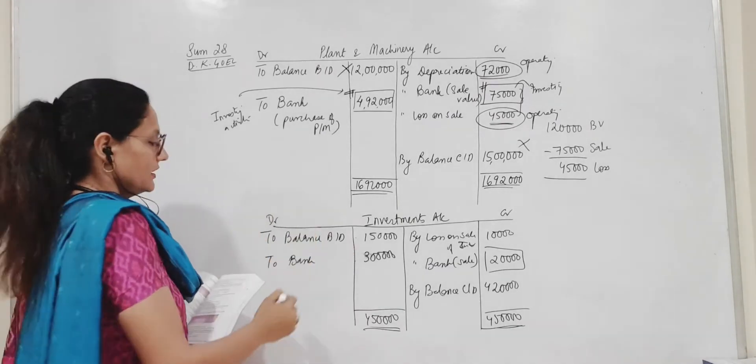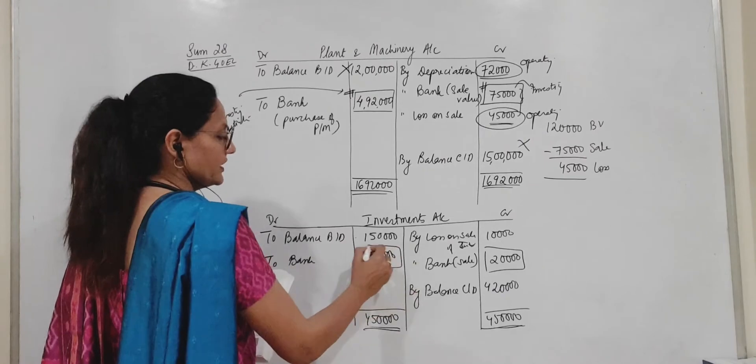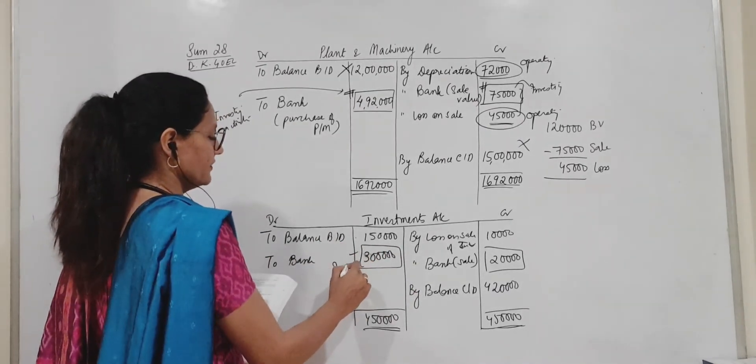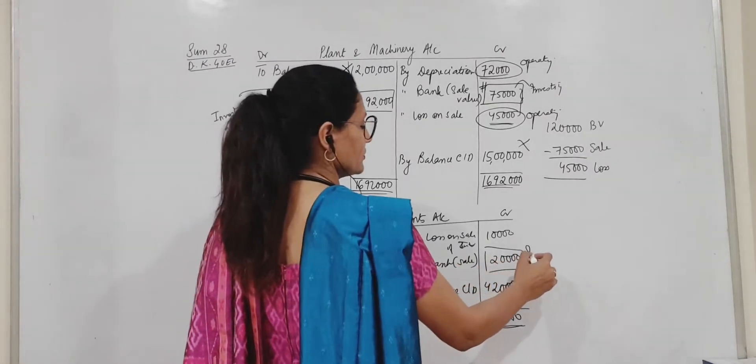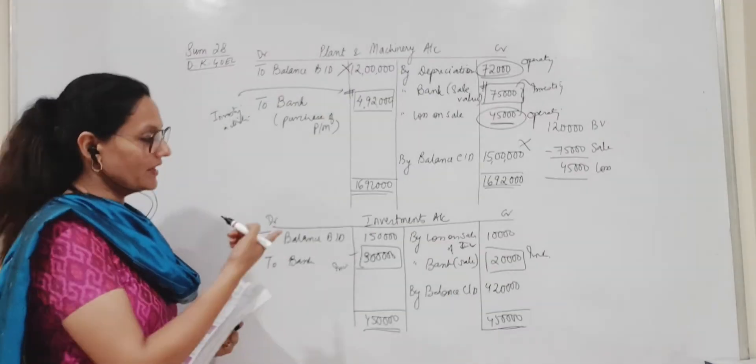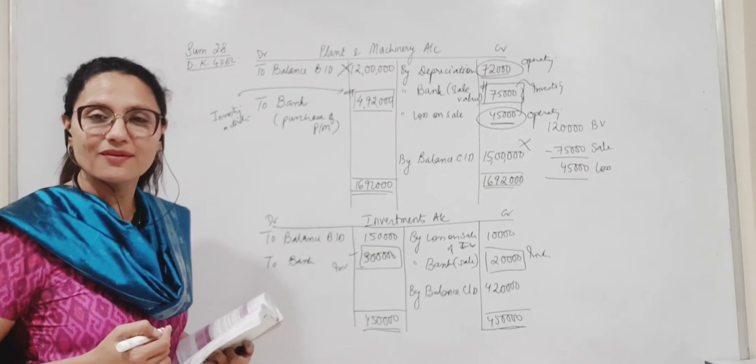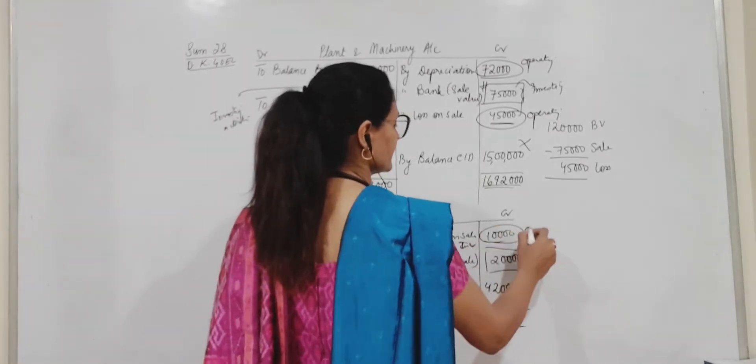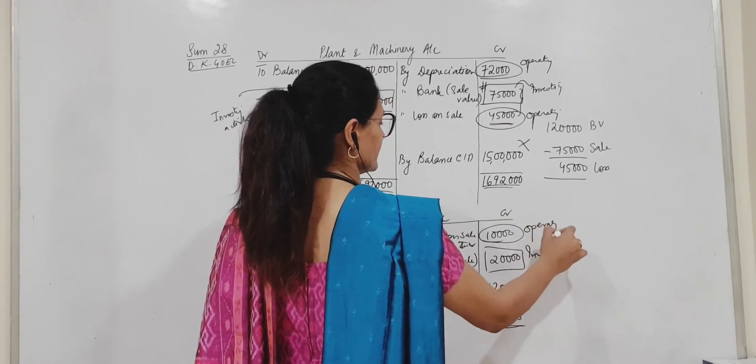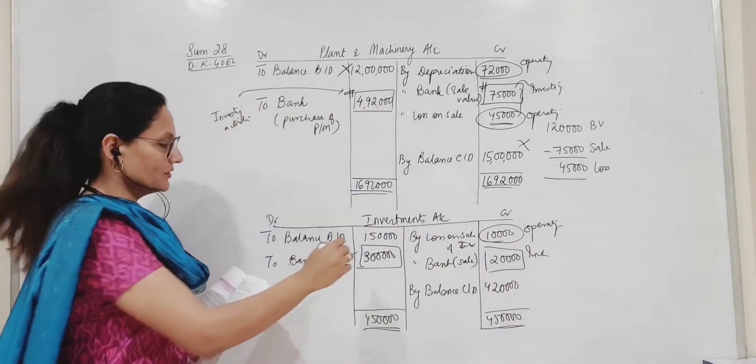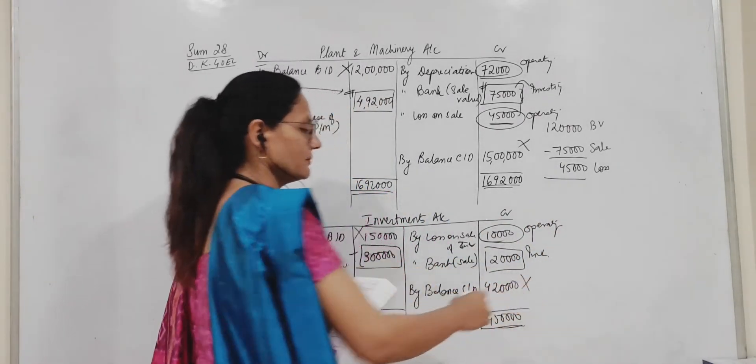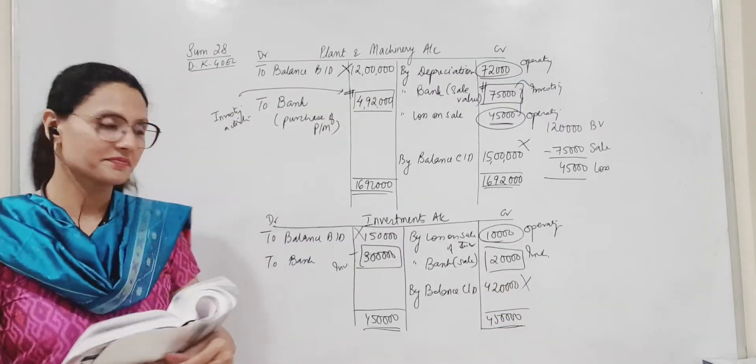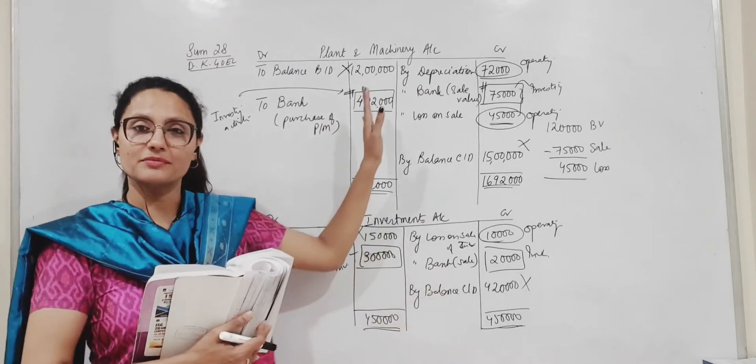Now this will go to investing activities. Bank here. This also will go to investing activities. Where will the loss on sale of investments go? Operating activities. Very good. Of course you know opening and closing balance will find no place in the cash flow statement. Investments account done. Plant and machinery account done.